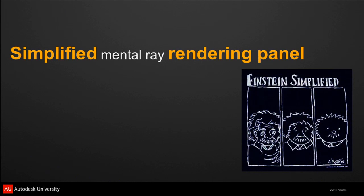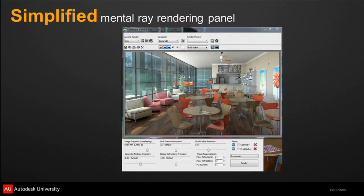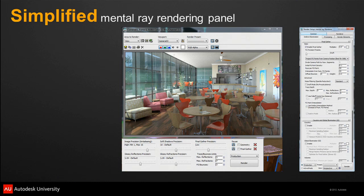The simplified Mental Ray rendering panel helps guide you through the settings needed for rendering with Mental Ray. It's designed to reduce the learning curve for new users, and also lets you accelerate test renders by tuning down settings for a less refined image, or increase settings for a more refined image quickly. Everything that exists in the simplified panel also exists in the main Mental Ray panel.